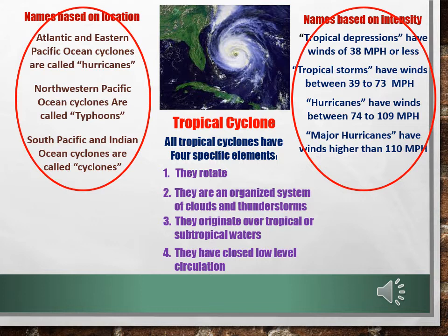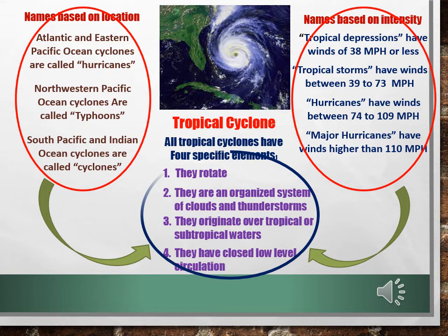Major hurricanes have winds higher than 110 miles per hour. But it doesn't matter what you name these storms — they are not tropical cyclones unless you can meet those four elements. This same idea holds true in criminal law, and there are five elements that must be met to show that an offender has committed a criminal act. Let's go to the next slide.